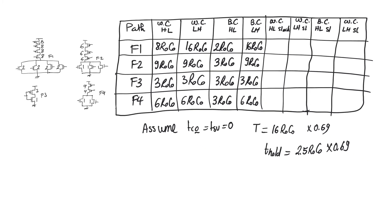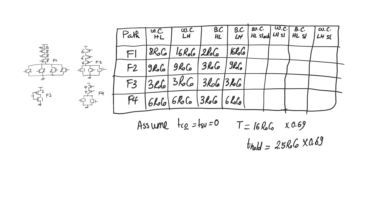We first check that there are no setup time violations, then check for hold time violations. Slack is calculated relative to the operating period of 16 R0C0. With T_setup = 0, inputs must arrive at the clock edge. For F1: worst case high-to-low slack = 16 − 8 = 8 R0C0; worst case low-to-high slack = 16 − 16 = 0. For best case: 16 − 2 = 14 R0C0 and 0 respectively. For F2: 16 − 9 = 7 R0C0 for most cases, and 13 R0C0 for best case high-to-low.